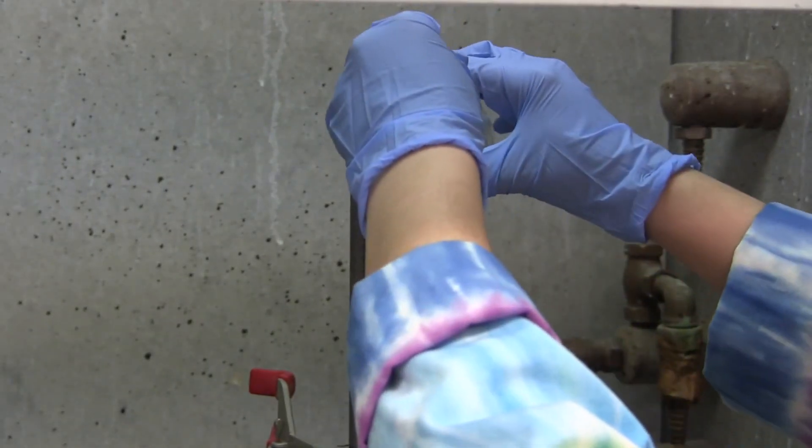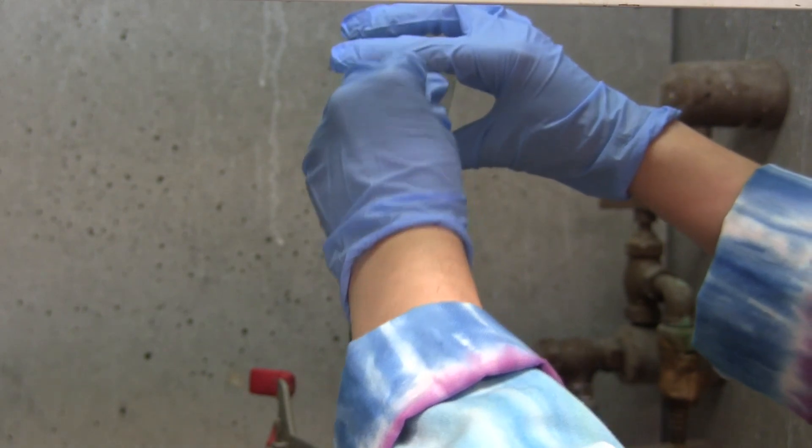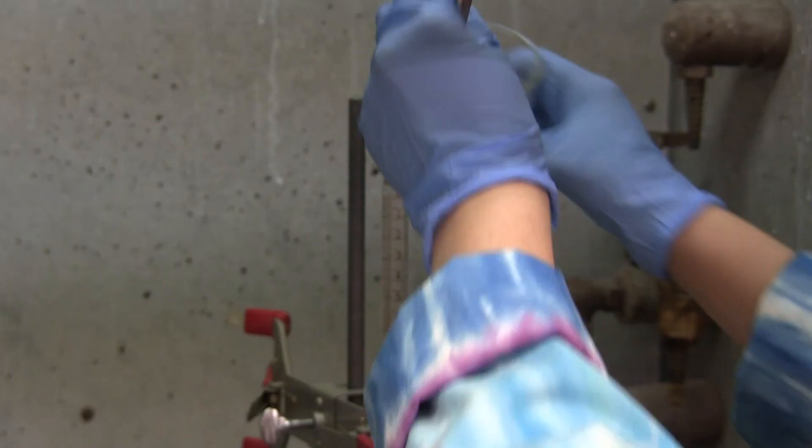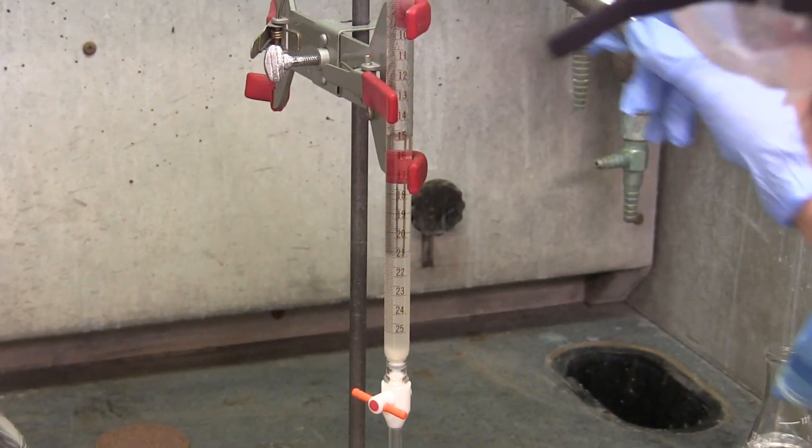The slurry is poured into the burette. A stirring rod can be used to help transfer the slurry. Adding more hexanes can help move the slurry down the column. While pouring, tapping the edge of the column with a pencil helps to dispel any air bubbles as they would affect the separation of the compounds.